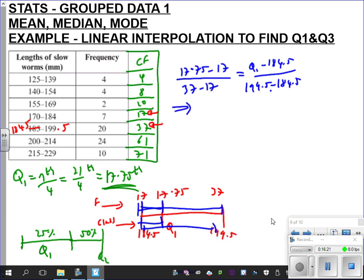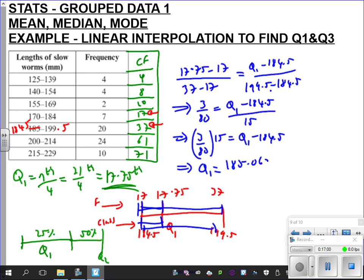Now we just need to rearrange. So 17.75 on the top minus 17 is 3 over 4 divided by 20. So that's 3 over 80 equals Q1 minus 184.5 divided by, and there's our 15. So if we times by 15, we get our Q1 subtract. Going a bit slower than last time. And then if we finish that off. So 3 over 80 times 15 plus 184.5, we get our Q1 is 185.0625.